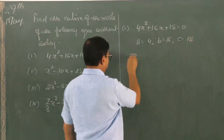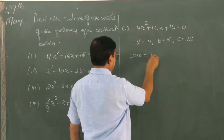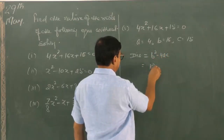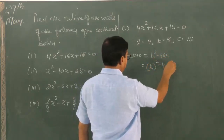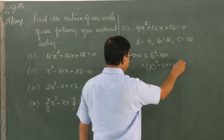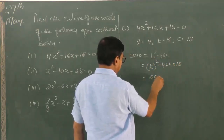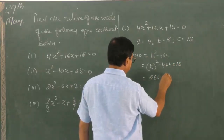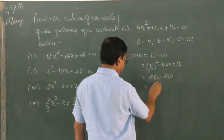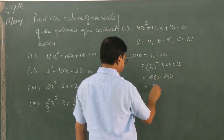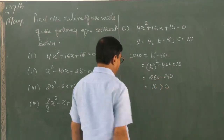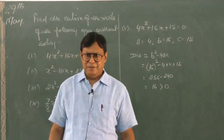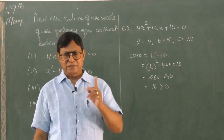The discriminant is B squared minus 4AC, that is 16 squared minus 4 into 4 into 15. Solving, we get the answer 16, which is greater than 0.